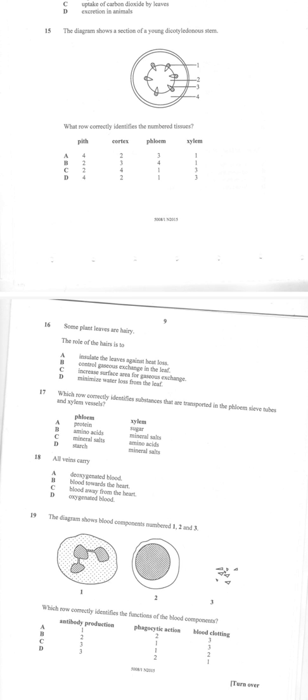So with that being said, the pith is number two, three is going to be our xylem, and then number four is our cortex.